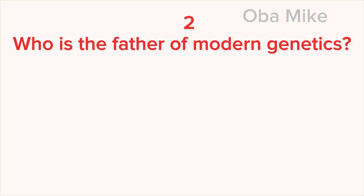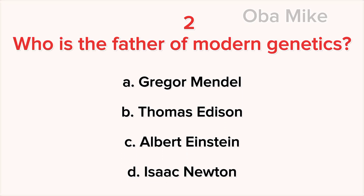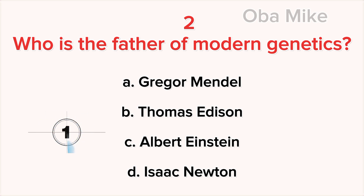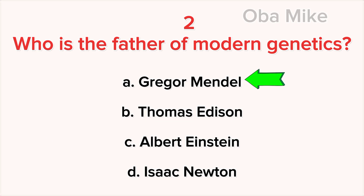2. Who is the father of modern genetics? A. Gregor Mendel, B. Thomas Edison, C. Albert Einstein, D. Isaac Newton. The correct answer is A. Gregor Mendel.